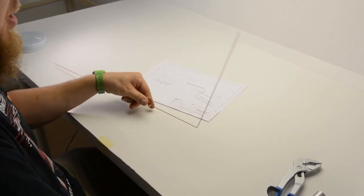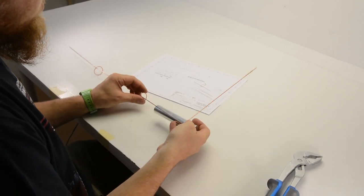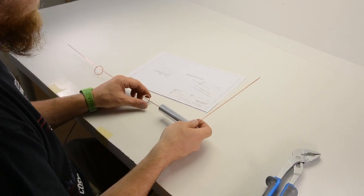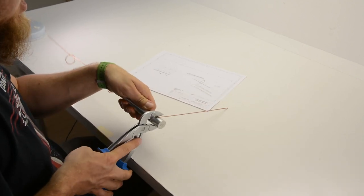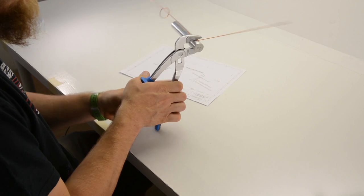We will do the loop in the same direction as the previous one. We mark the direction. Take the pliers. Again, repeat the process.